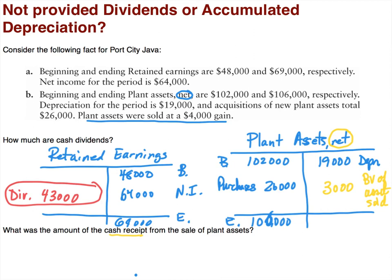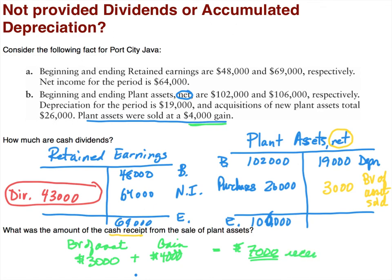We know the book value of the asset sold was $3,000, and we also know that we sold it at a $4,000 gain. Therefore, the cash receipt must have been $7,000 received.